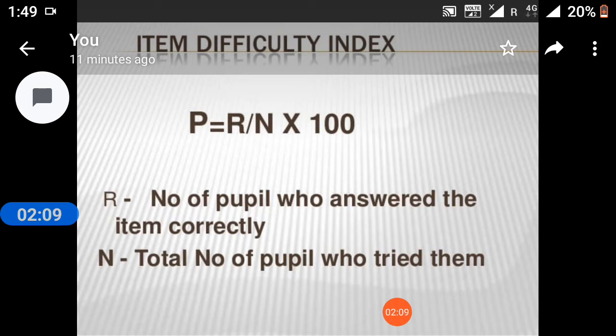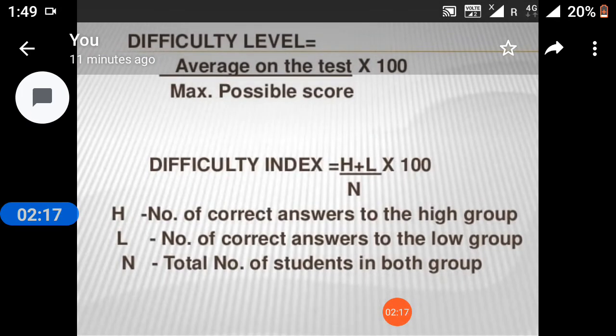R equals number of pupils who answered the item correctly. N equals total number of pupils who tried at them. Difficulty levels: average on the test upon maximum possible scores into 100.